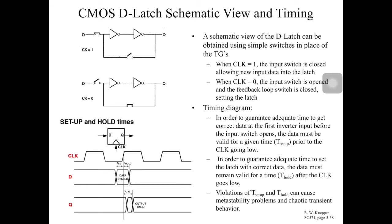A D-Latch can be considered as two inverters back to back connected together with a switch. The switch is on when the clock is one, so when the switch is on the input can travel through the first inverter to the second inverter. When the switch is off, which occurs when the clock equals zero, the feedback loop is activated, so whatever input was stored in the latch would continue on regardless of the input.